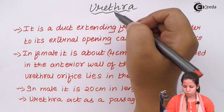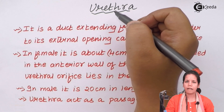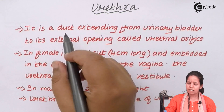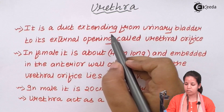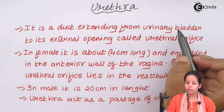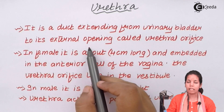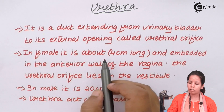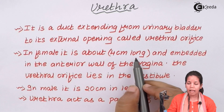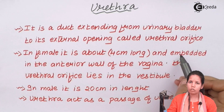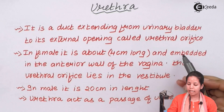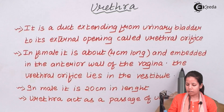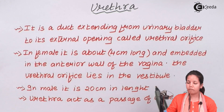Urethra can be described as a duct that extends from the urinary bladder to the external opening called the urethral orifice. In females, the urethra is about 4 cm long and is situated in the anterior walls near the vagina. The urethral orifice lies in the vestibule.